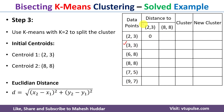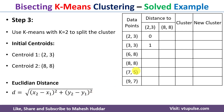Next, we calculate the distance from the second data point to centroid one. With x₂ = 2, x₁ = 3, y₂ = 3, y₁ = 3: √[(2−3)² + (3−3)²] = 1. Similarly, we calculate the distances from all the remaining data points to centroid one, and the distances look something like this.